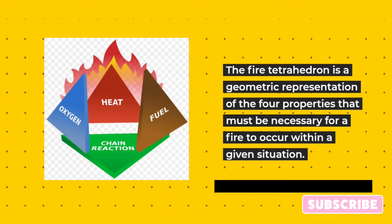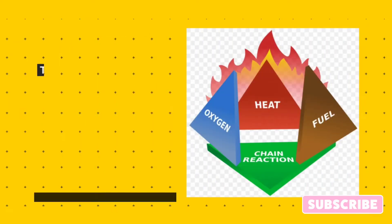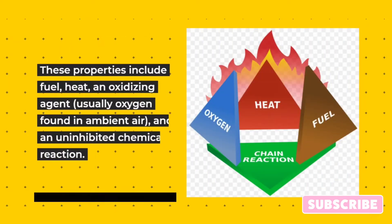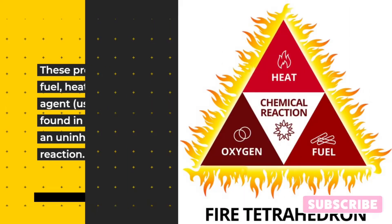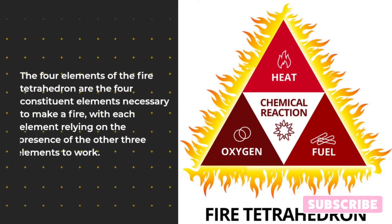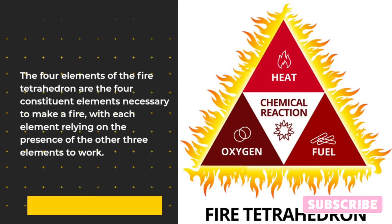The fire tetrahedron is a geometric representation of the four properties that must be present for a fire to occur. These properties include fuel, heat, an oxidizing agent — usually oxygen found in ambient air — and an uninhibited chemical reaction. Each element relies on the presence of the other three to sustain fire.